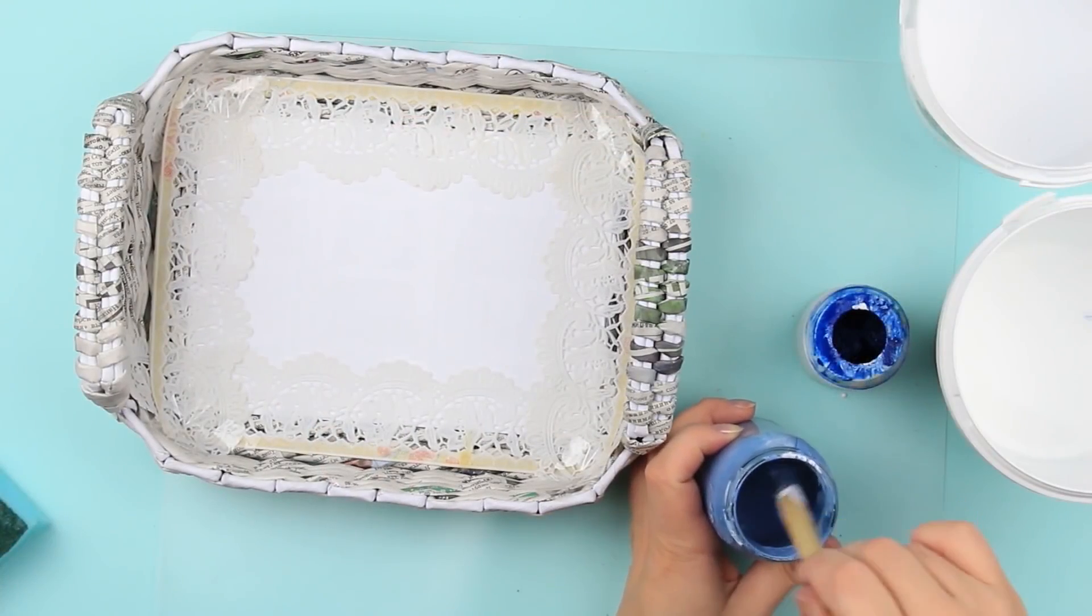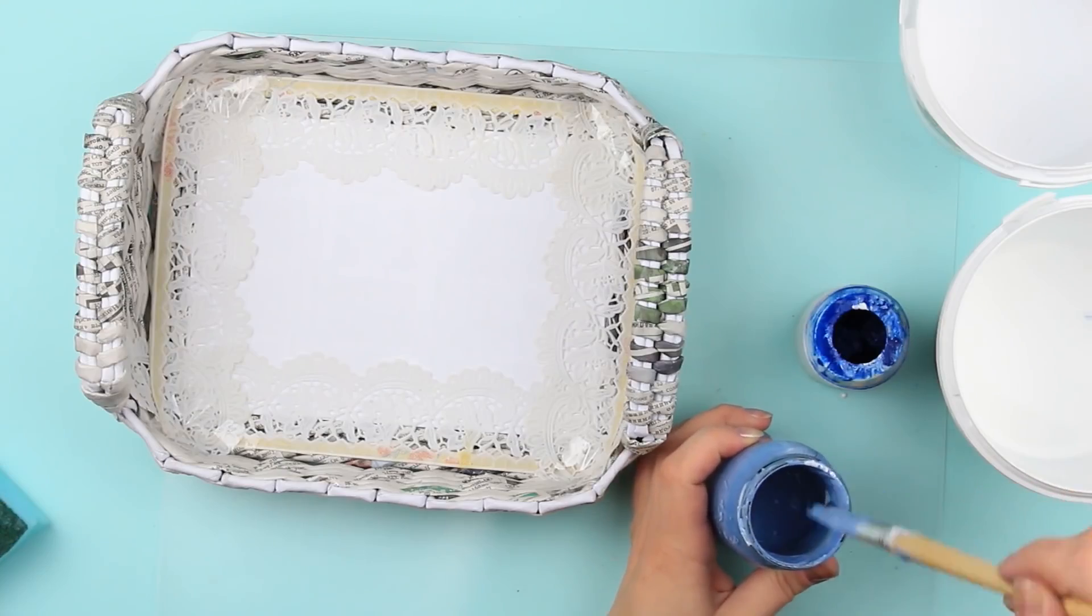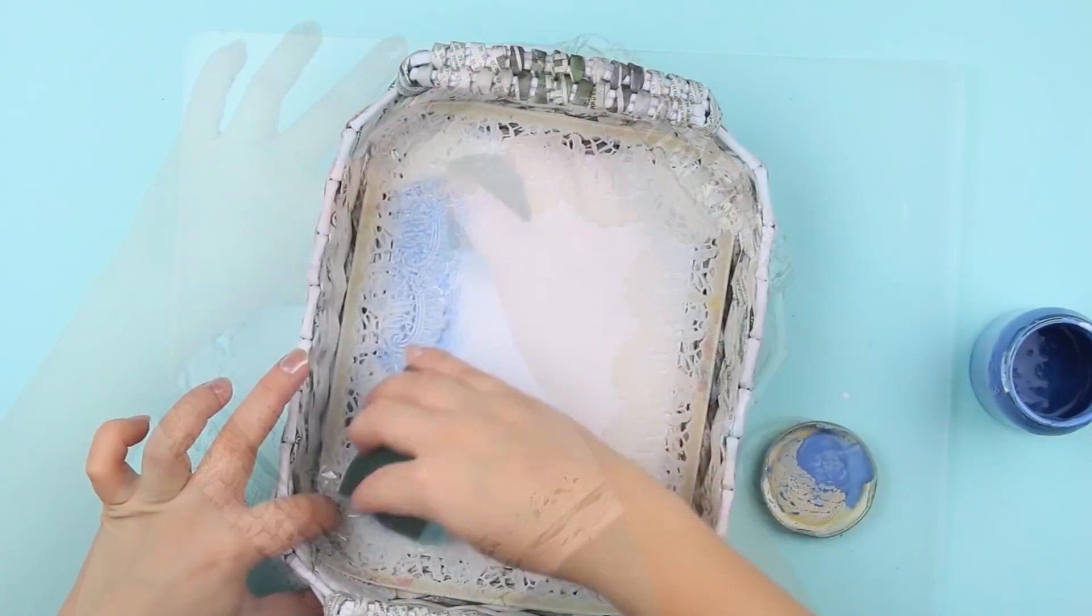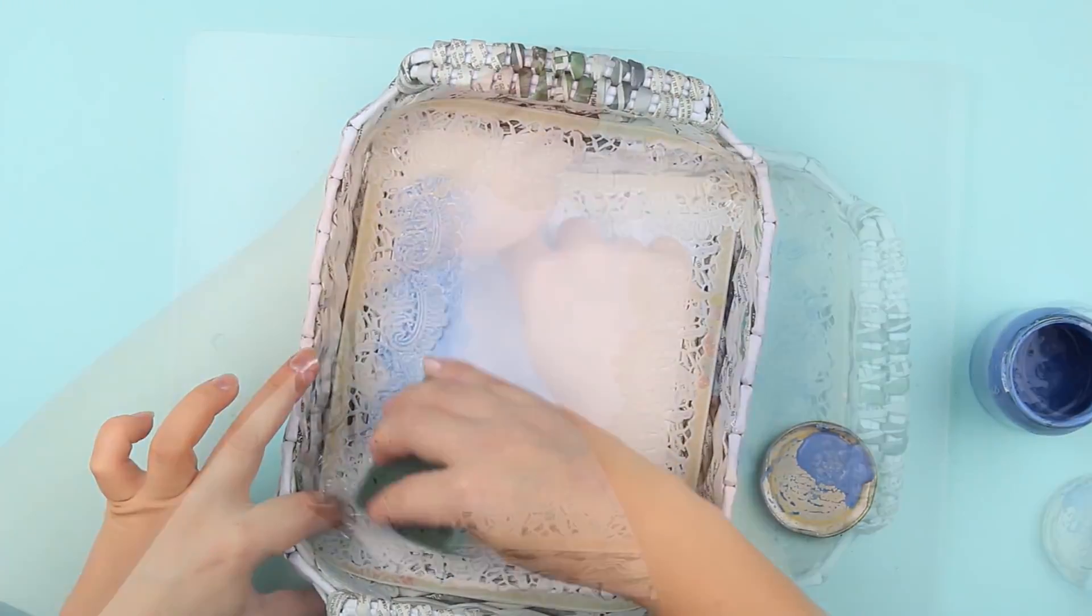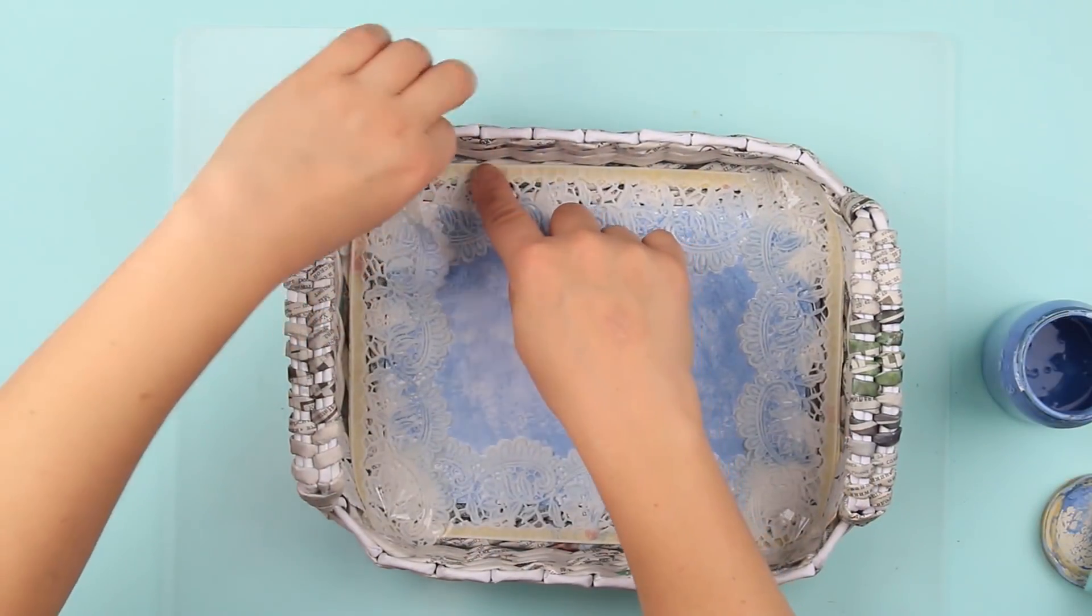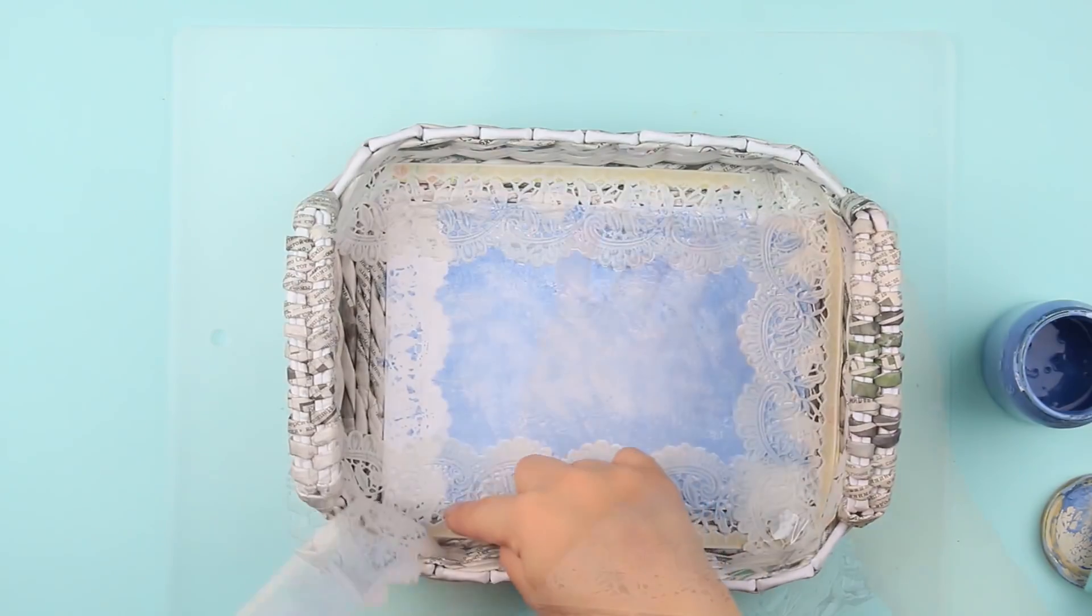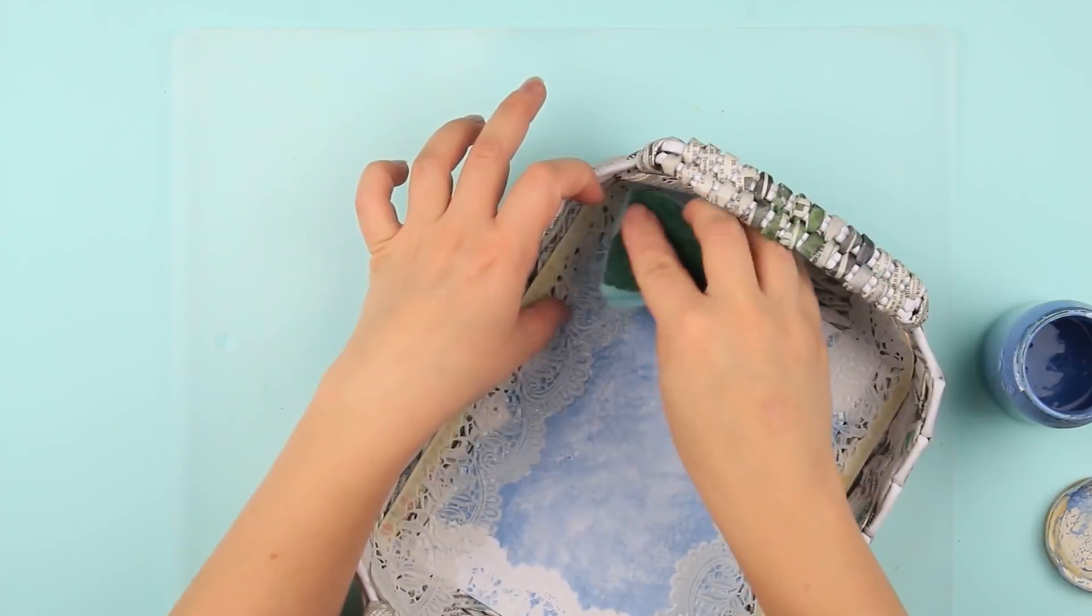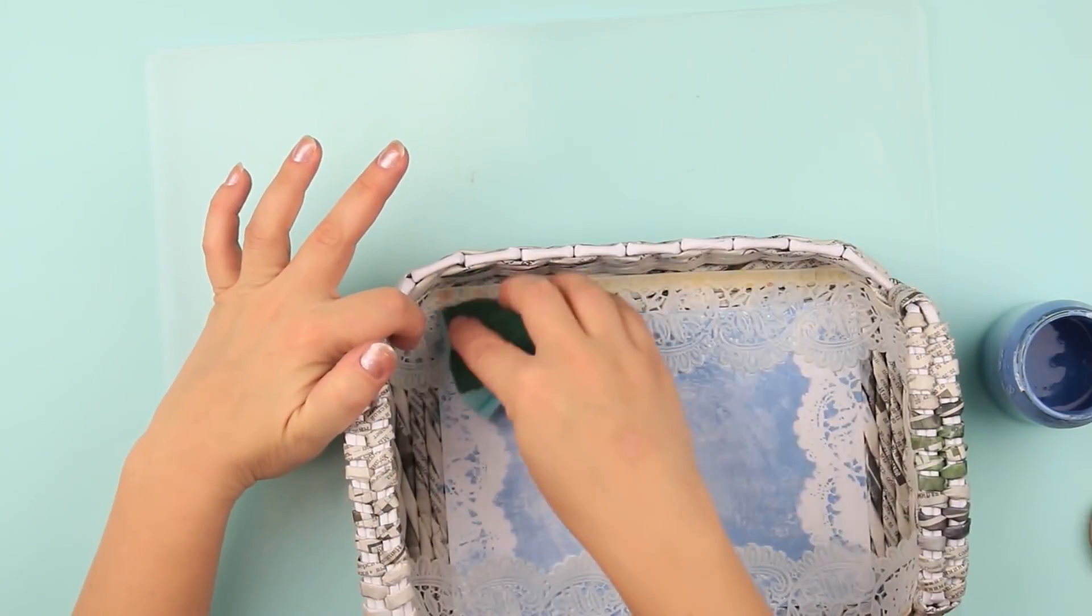Add blue gouache to the ground. Touch the stencil with the blue paint using a sponge. When dry, remove the stencil from the two opposite sides. Add some paint to the corners and take off the rest of the stencils.